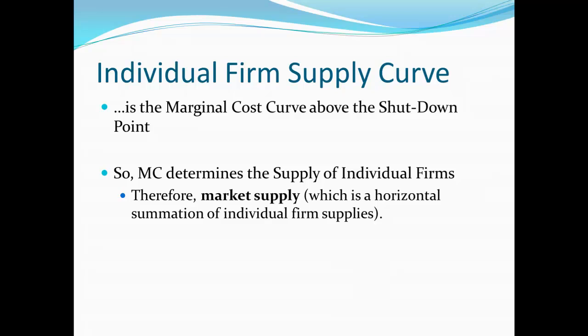Your marginal cost is really what determines the supply from any individual firm. And therefore, market supply as a whole is going to be determined by the marginal cost of the various individual firms, since market supply is really just adding up what each individual firm supplies. If we have one firm producing 10 and another producing 20, in the market as a whole we're producing 30. So in the end, it's really marginal cost that underlies all of supply.